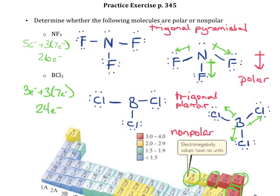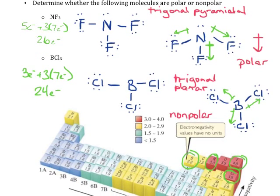If you're checking electronegativity values and you have two elements with the same electronegativity value — for example, a bond between carbon and sulfur, since those have the same electronegativity values — you would not draw any bond dipoles at all. There's no difference in electronegativities, so you must have a nonpolar molecule.